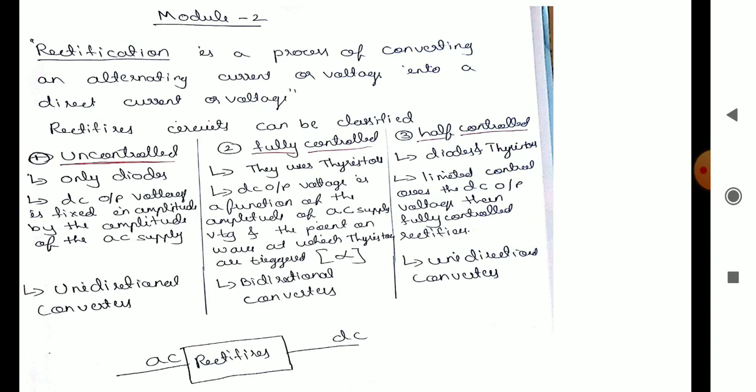Before studying phase controlled converters, we need to understand what a rectifier is and its classification. A rectifier is a device which converts AC to DC. Rectification is the process of converting an alternating current or voltage into a direct current or voltage.